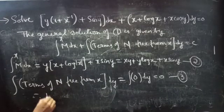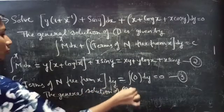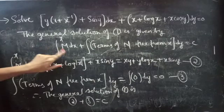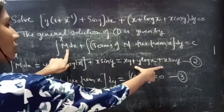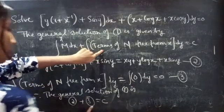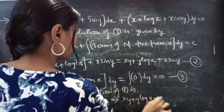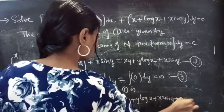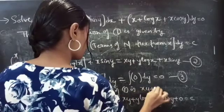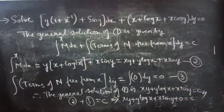Therefore, the general solution of equation 1 is equation 2 plus equation 3 equals to c. The result from ∫M dx is equation 2, and the integral of terms of N free from x is 0, that is equation 3. So xy plus y log x plus x sin y plus 0 equals to c.